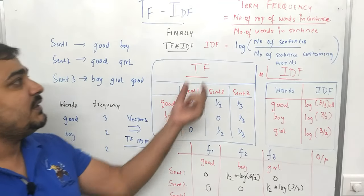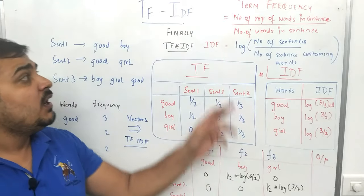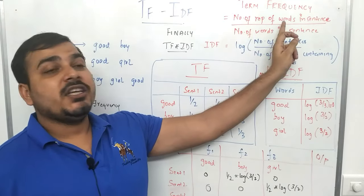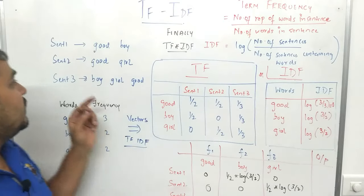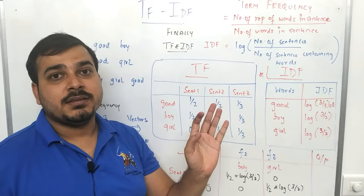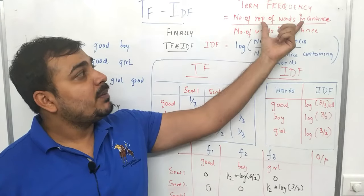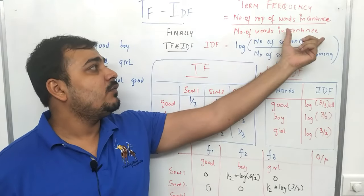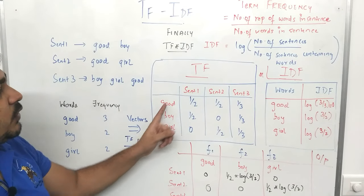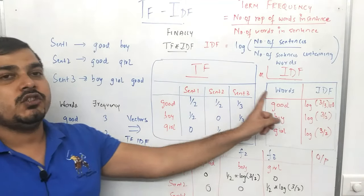In TF-IDF, the first technique is called term frequency. Term frequency is given by the formula: number of repetitions of a word in a sentence, divided by number of words in that sentence. Now I have these three features — good, boy, and girl — and with respect to these we'll try to find out the term frequency of good, boy, and girl in sentence one, sentence two, and sentence three.